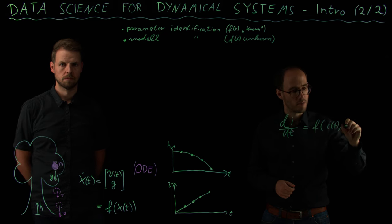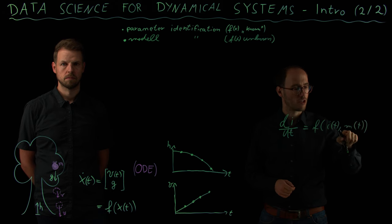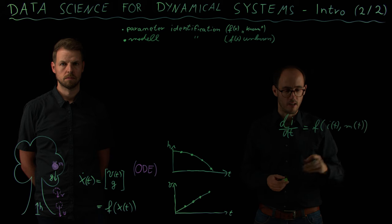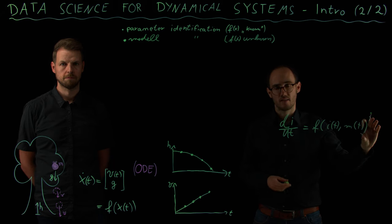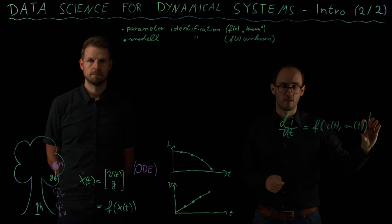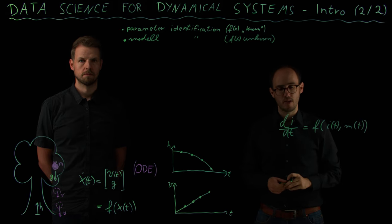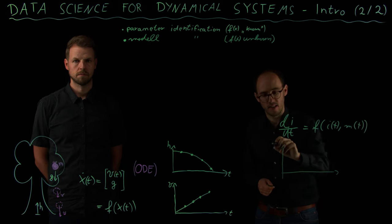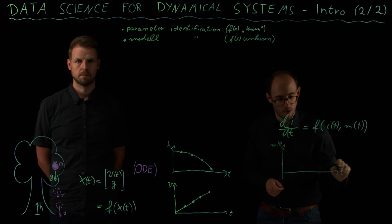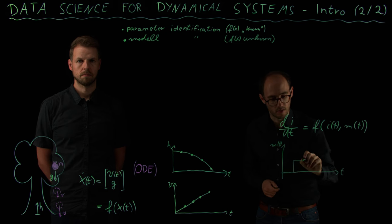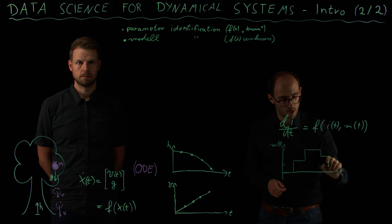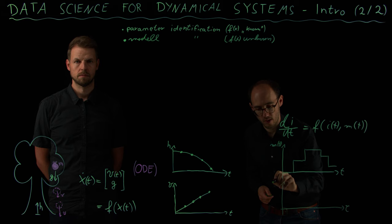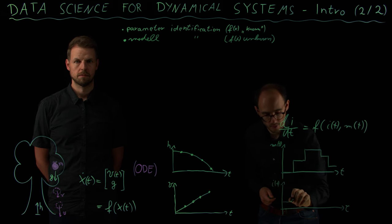The interest rate I would be our state, and we describe this as a right hand side F of I of t, so the interest rate, and we also consider some input here to the system which we call M of t, which is the monetary action of some central bank. This right hand side in this economic example is normally not easily describable.